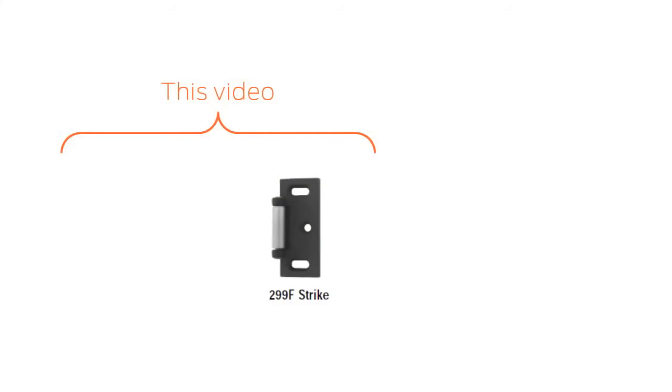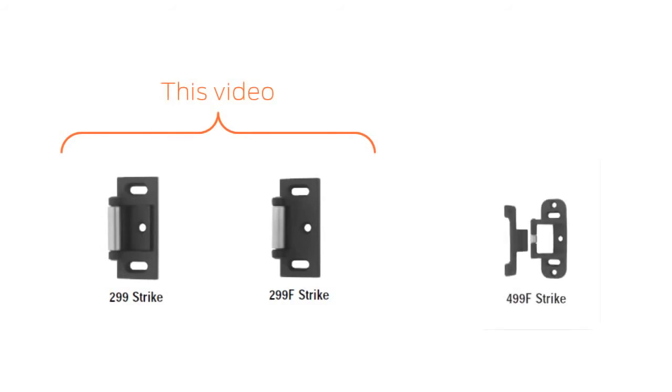We are using a 299F strike, which is installed the same way as a 299 strike. If your installation calls for a 499F strike, see the instructions on page 8.